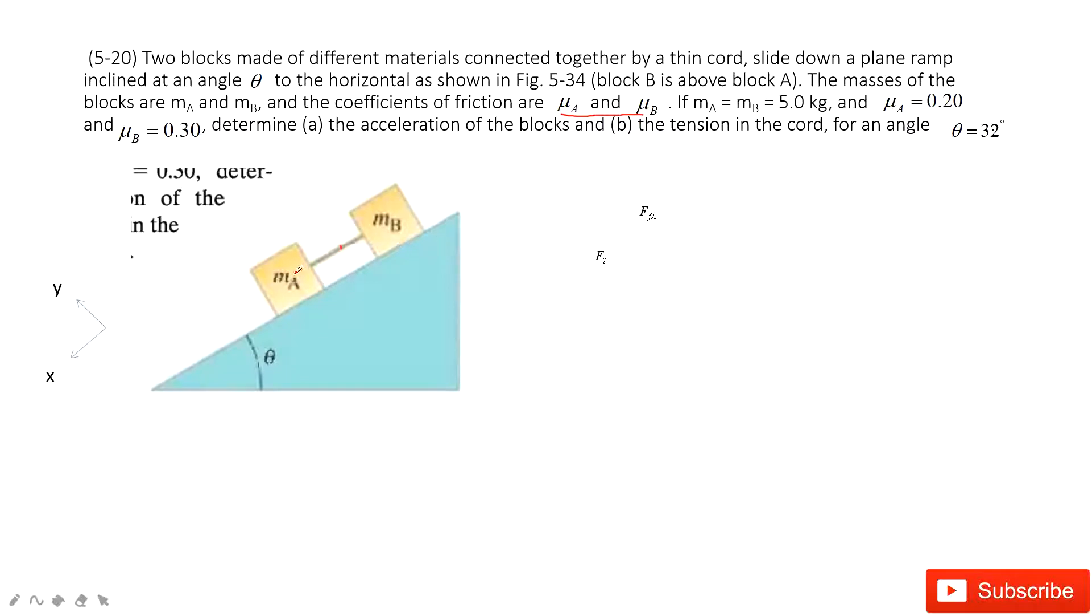Now we do the first analysis for object A. When we look at A, we must consider gravity, normal force, and the tension from the cable, and also the friction by the surface, friction A. We look at the X and Y components. Along the slope is X component, vertical to the slope is Y component. We project the gravity at X component and Y component. We get Mg cosine theta and Mg sine theta.